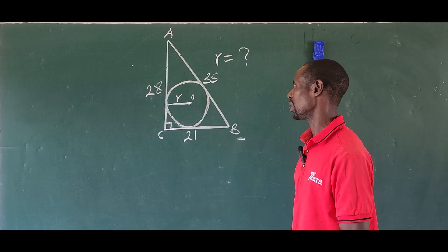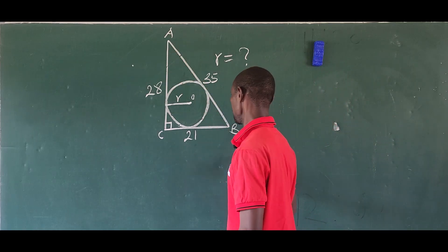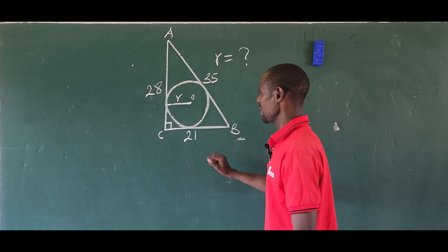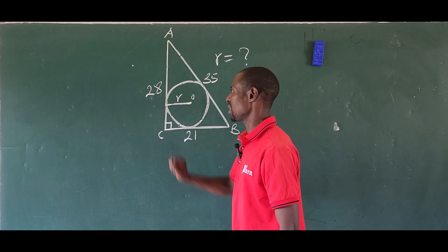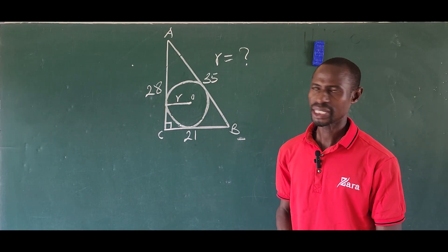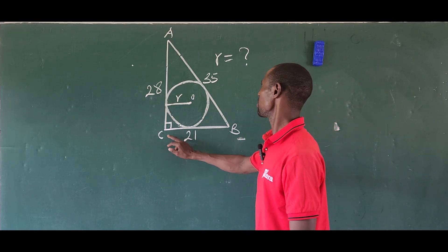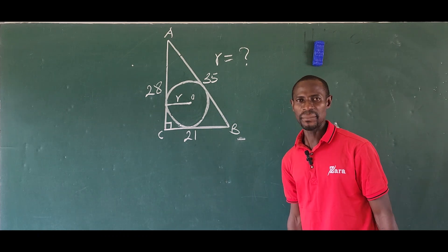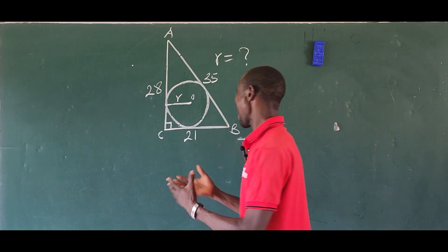We have triangle ABC with side a equal to 21, side b equal to 28, and side c equal to 35, the hypotenuse. Now we are asked to find the radius of this circle.